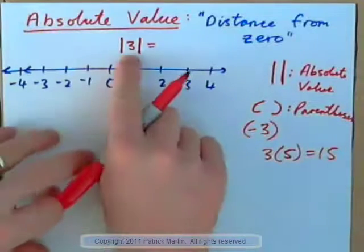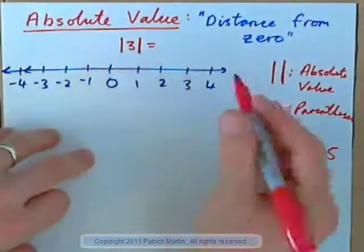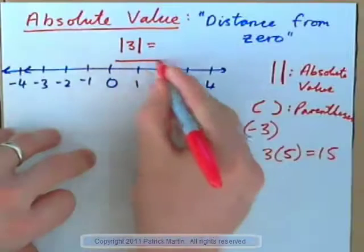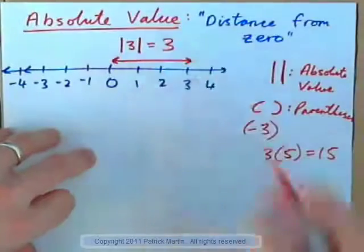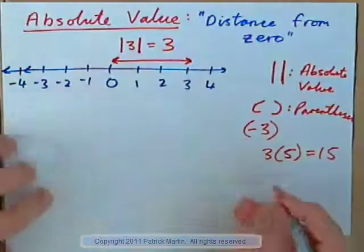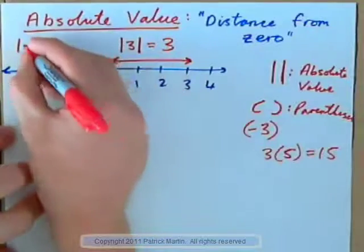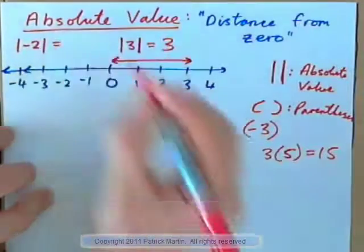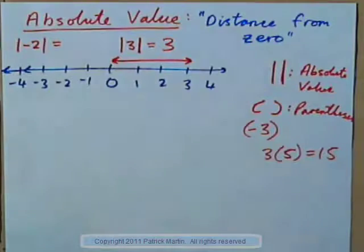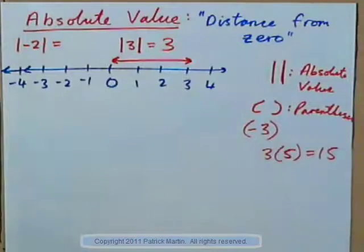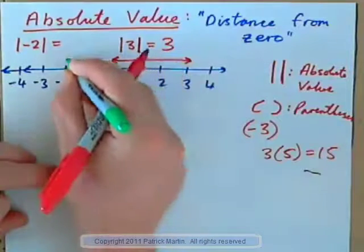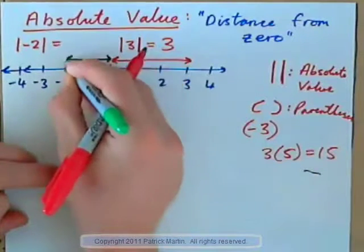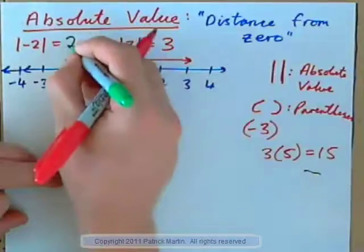The absolute value of three is the distance three is from zero. How many units is three from zero? Well, it's three units. How about the absolute value of negative two? How far is negative two from zero? Distance always has to be positive. How far is negative two from zero? It's two units from zero.